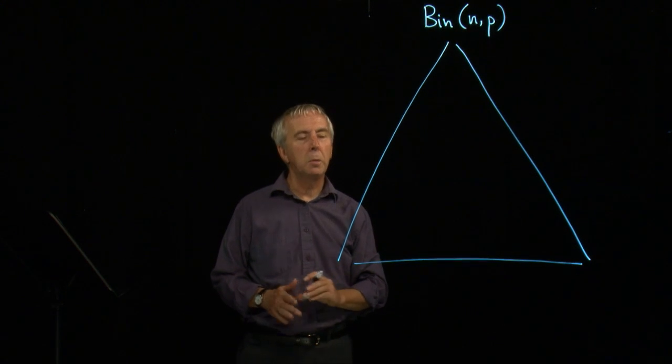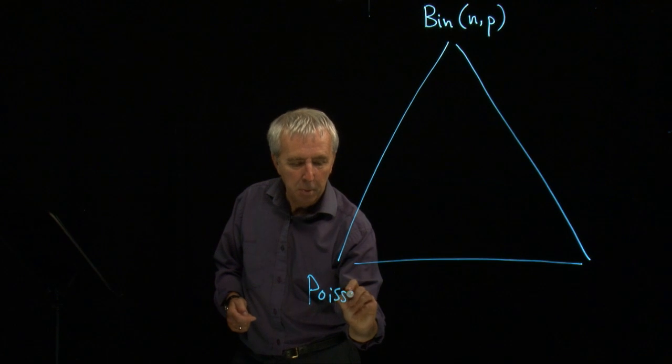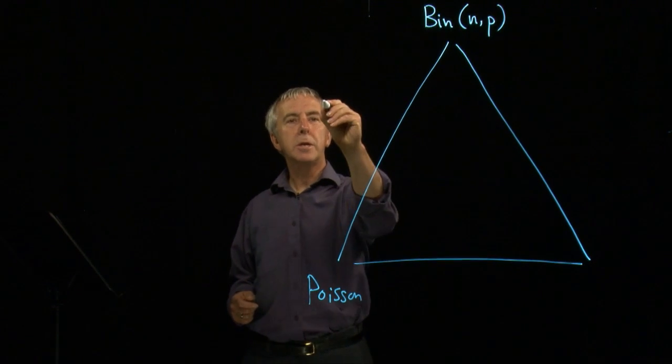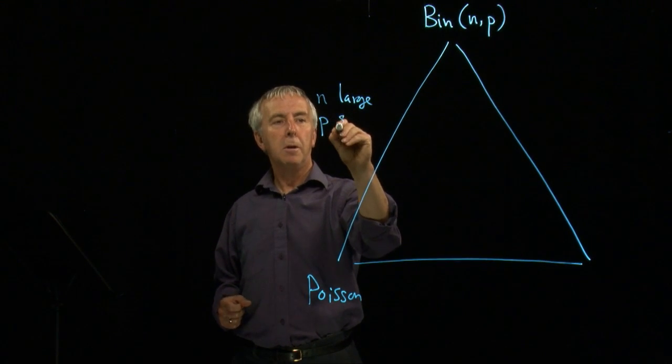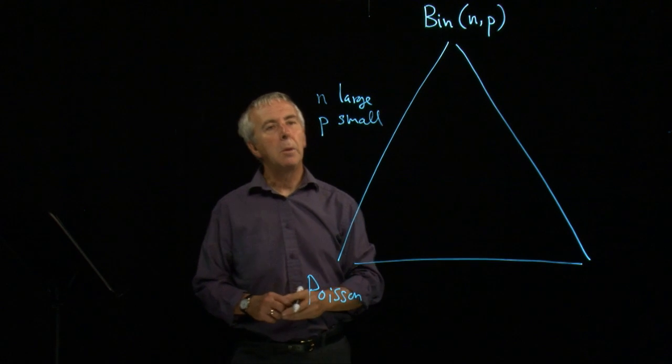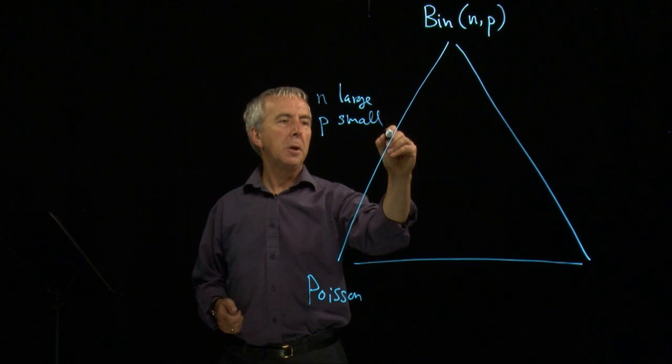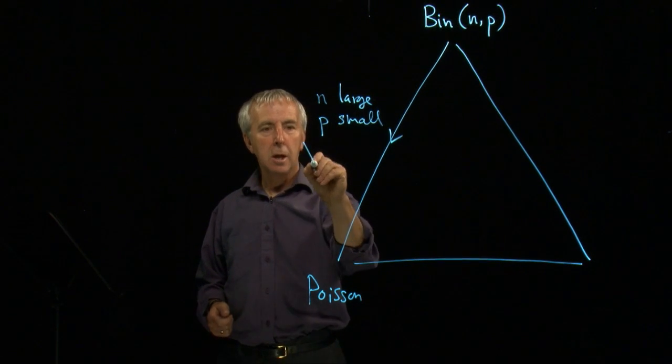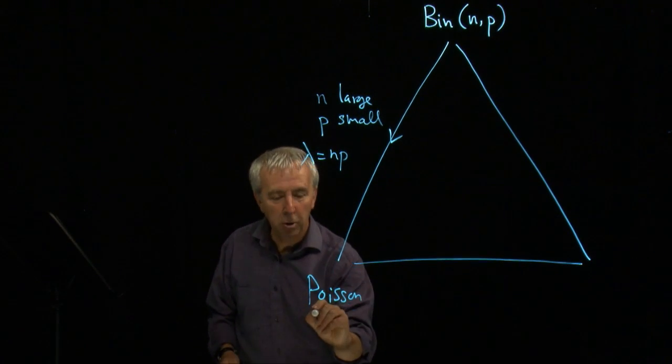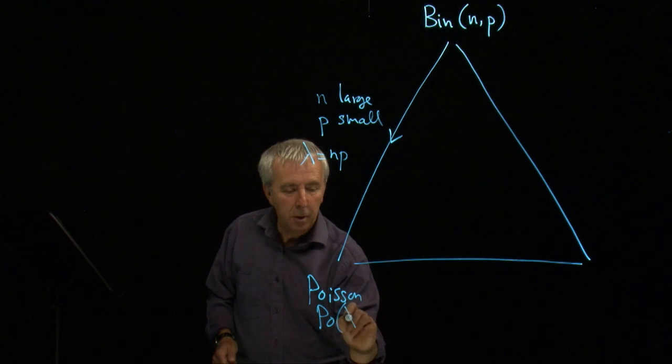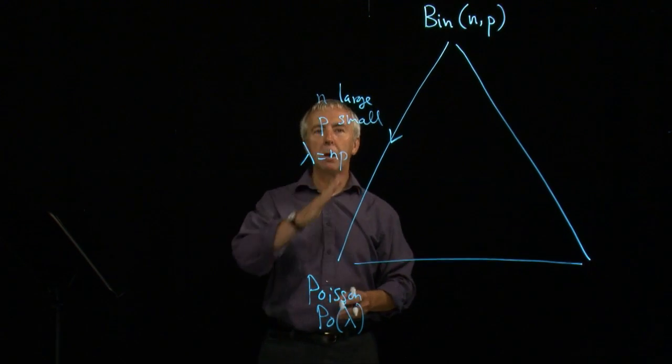In one scenario, we can approximate this with a Poisson. And that scenario is n very large and p very small. We can find the mean as np. So we take lambda equal to n times p and we get the Poisson, which we sometimes write as Poisson with parameter lambda. So that's that particular approximation.